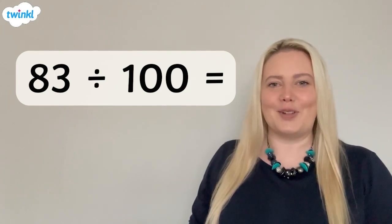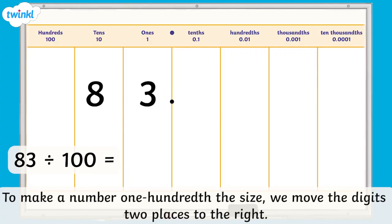It's over to you now. Pause the video and use the place value chart to find the answer to 83 divided by 100. Remember, to make a number one hundredth the size, we move the digits two places to the right.